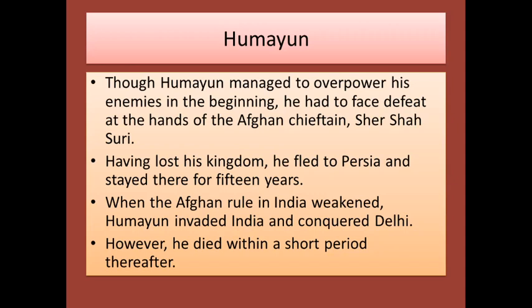Though Humayun managed to overpower his enemies in the beginning, he had to face defeat at the hands of the Afghan chieftain Sher Shah Suri. Having lost his kingdom, he fled to Persia and stayed there for 15 years. When Afghan rule in India weakened, Humayun invaded India and conquered Delhi. However, he died within a short period thereafter.